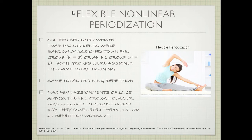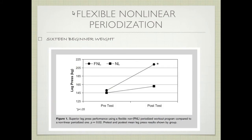They took 16 beginner weight training students and assigned them to a flexible group or a non-linear group. Both had the same total training volume. They had assignments of 10, 15, and 20 RMs, but the flexible group could choose what day they did that. The flexible group gained more strength than the non-flexible group — FNL is flexible, NL is not. This suggests there should be some sort of auto-regulation with the athlete, and it's very important to take into consideration how the athlete feels — that's the psychology behind programming.